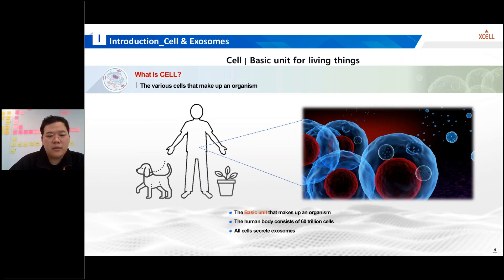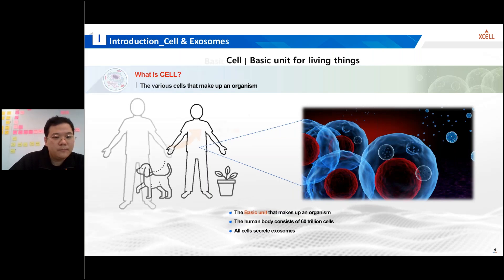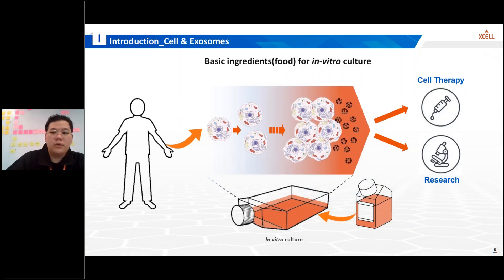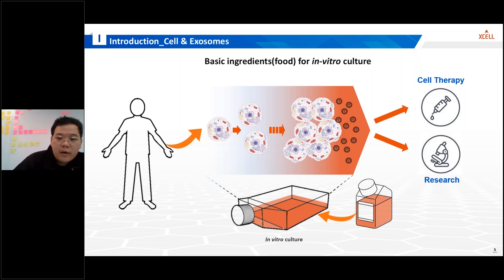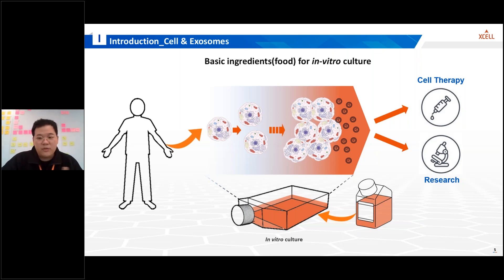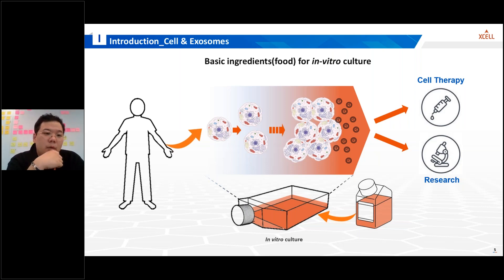In fact, the human body consists of approximately 60 trillion cells, each with its unique characteristics and function. It's essential to note that all cells secrete exosomes. To conduct research or develop therapeutics involving cells, we need to proliferate these cells outside the body — we call it in vitro. That's where cell culture media come into play. Culture media provide the necessary nutrients and conditions for cells to grow and thrive in vitro, giving us a sufficient number of cells for research or treatment purposes.